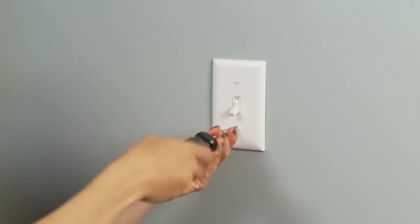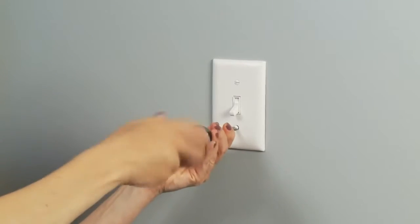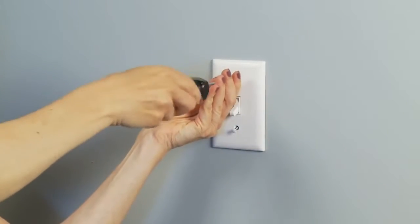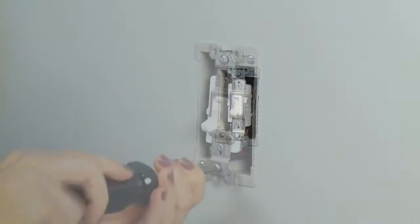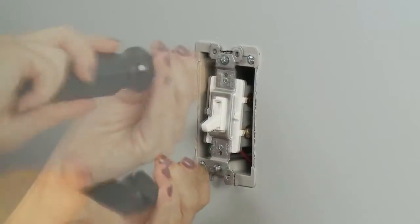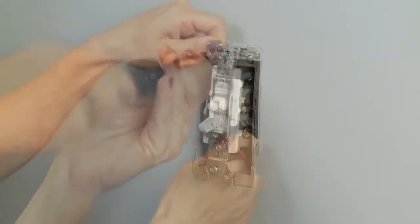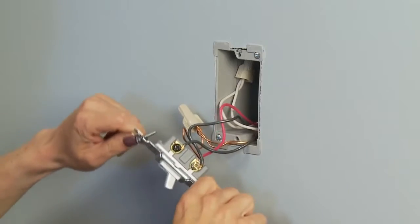Once you turn off the power at the breaker, you can begin removing your old switch or dimmer. Begin by unscrewing the wall plate from the wall. Next, unscrew your old device from the wall box, which should leave it only connected to the wall box by the wires.